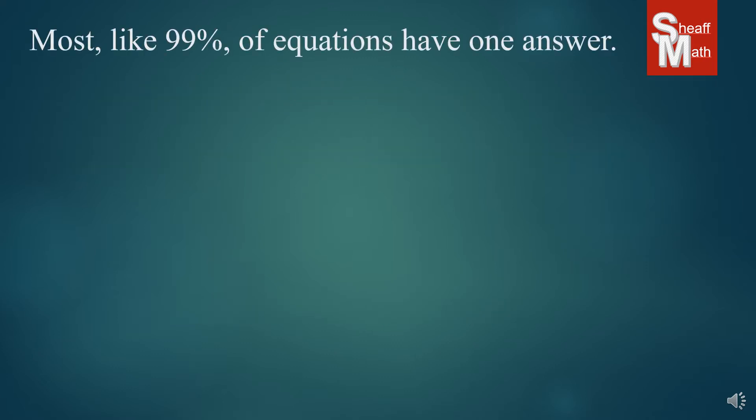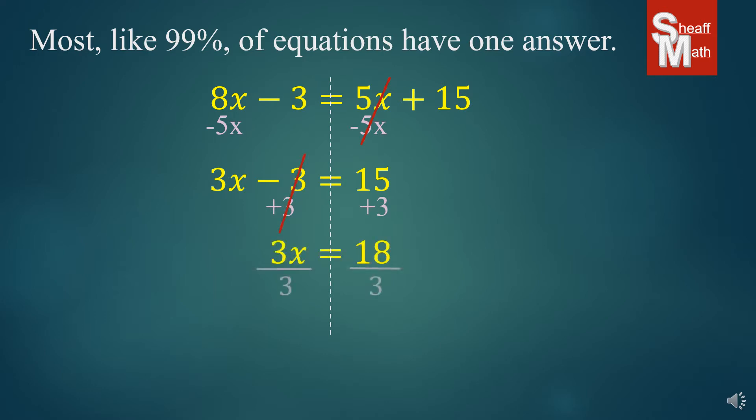Now, most equations, like 99% of the ones you're going to be working on, have one answer, kind of like this example. I'm solving for x, and so I get x's on one side. I do the proper equation operations to get that x by itself, and I get x equals 6. One answer, right?